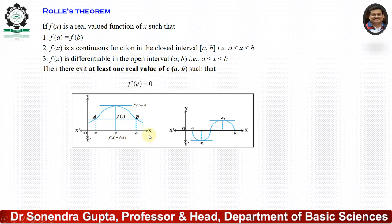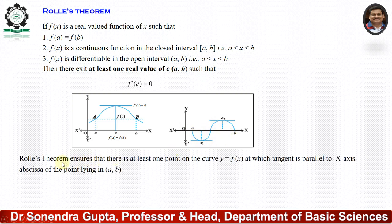In this graph we have seen that f'(c) = 0, which means the slope of the function is parallel to the x-axis. In the second diagram we have seen that c₁ and c₂ are two values lying in the open interval (a, b). Rolle's Theorem ensures that there is at least one point on the curve y = f(x) at which the tangent is parallel to the x-axis, with the point lying between the open interval (a, b).